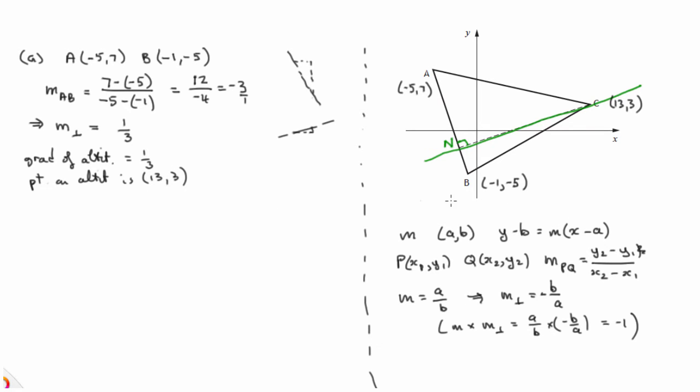So because of this y minus b equals m(x minus a) formula, we now know that the equation of the altitude is given by y minus 3 equals gradient 1 third, times (x minus 13). So let's get rid of this third. Let's multiply both sides by 3. So 3 lots of (y minus 3) would be 3y minus 9. And 3 lots of a third is 1. So 1(x minus 13). 3 times the third becomes a 1.